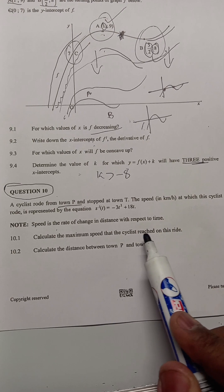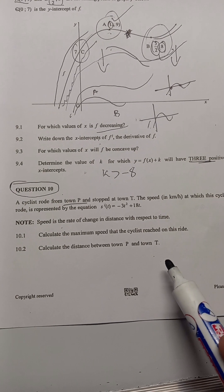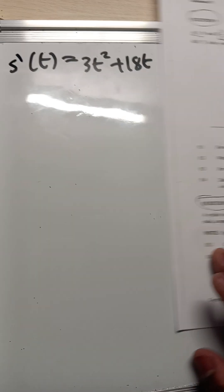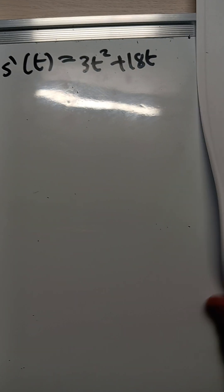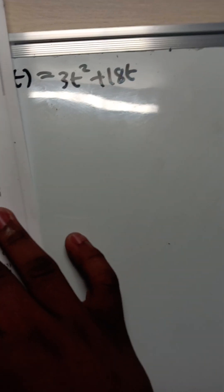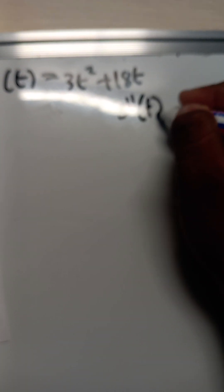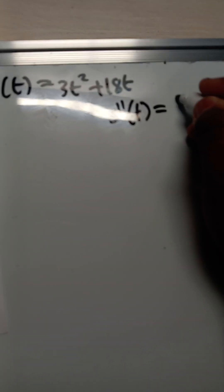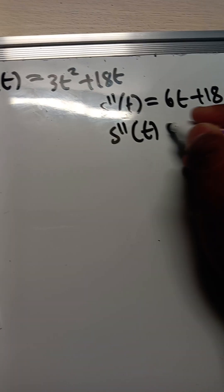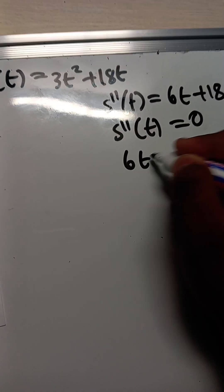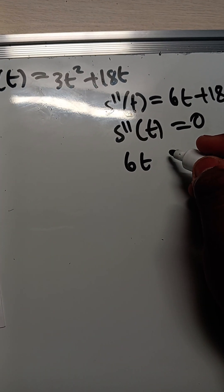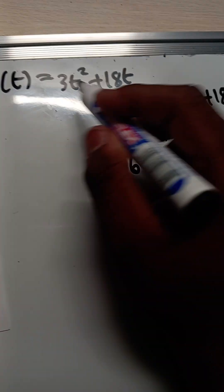Calculate the maximum speed that the cyclist reached on this ride. We have to do differentiation. So s''(t) - the second derivative - equals -6t + 18. Now the second derivative must be set equal to zero.